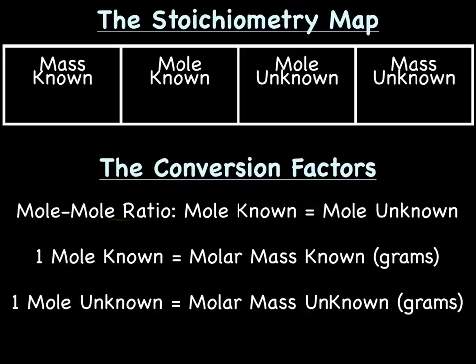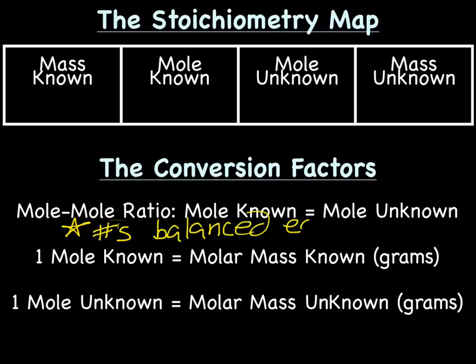Let's review the stoichiometry map. I highly suggest you write out this map for each and every problem: mass known → mole known → mole unknown → mass unknown. It seems like a waste of time, but it's a map — it'll keep you from getting lost. Our conversion factors include the mole-mole ratio, which is mole known to mole unknown. These numbers come from the balanced equation.